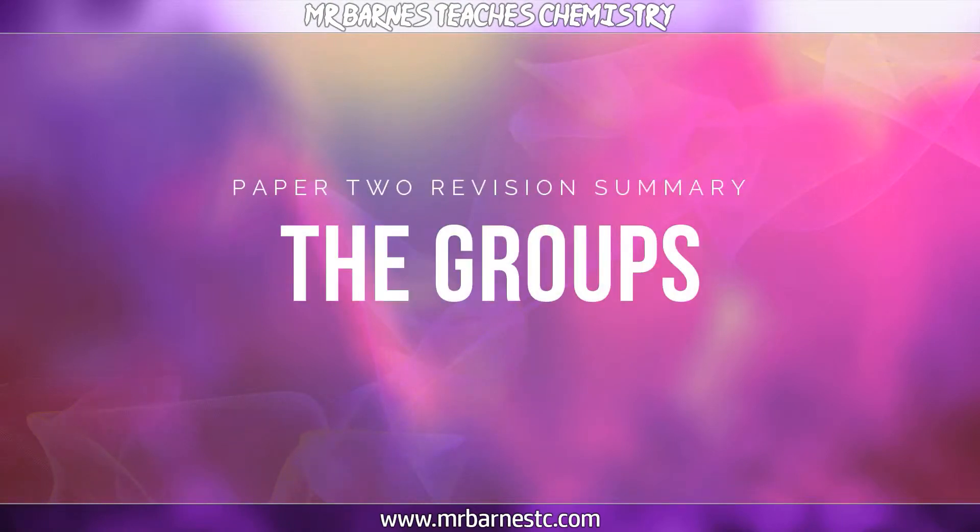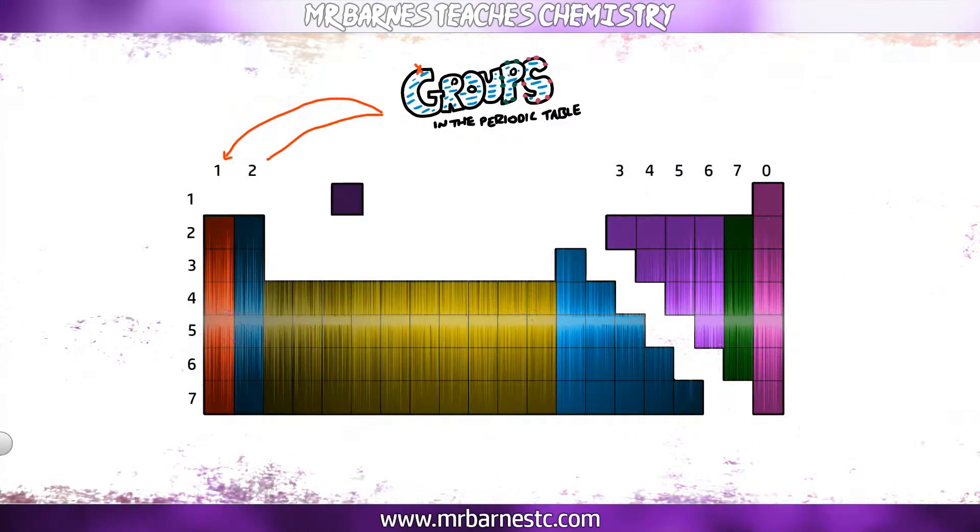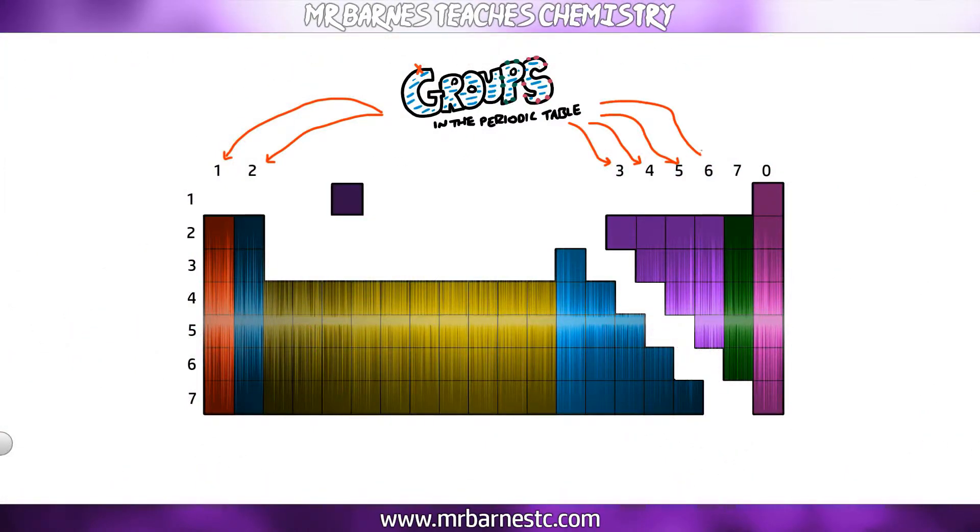Part 1 then, what are the groups in the periodic table? So the first thing you need to know is the groups are the columns going down, as you can see here. There are three in particular that you need to know for your exam.